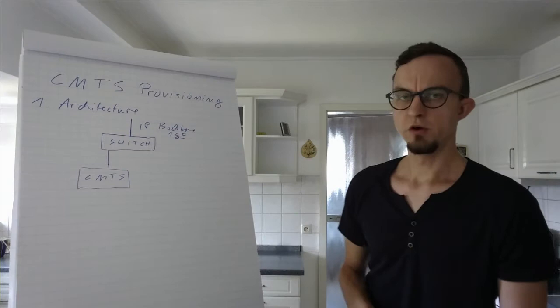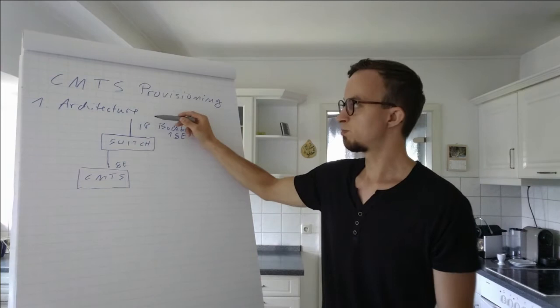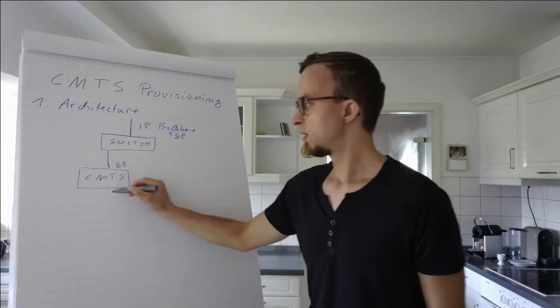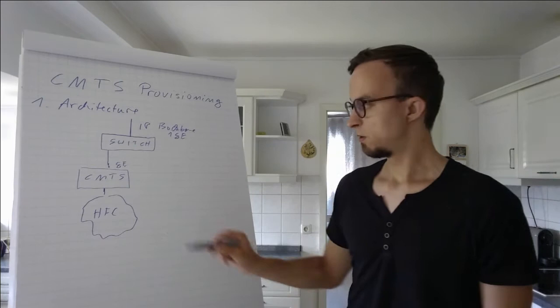The first thing that we see is that the CMTS requires an Ethernet input. For example, here's just a normal gigabit link and then we provide the IP backbone to the cable modem termination system. On the other side, the CMTS has RF interfaces and with these RF interfaces we can provide our HFC network. On the other side here are the end customers with the cable modems.